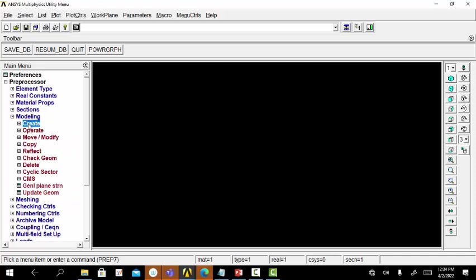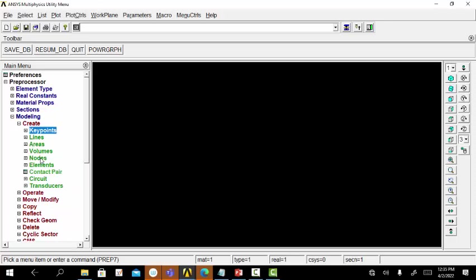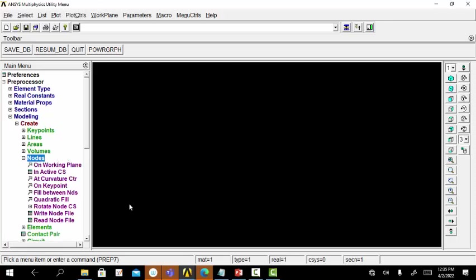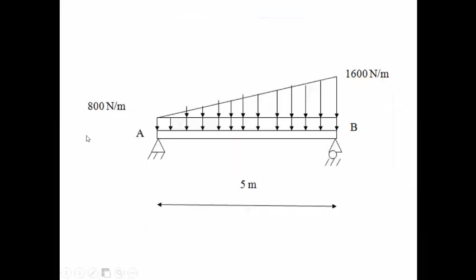Next we can model the entire beam element using the nodes and elements option. To apply the UVL values we have to go with nodes and elements option instead of key points and lines option. Here we can subdivide the entire element into 4 number of elements: first, second, third and fourth element. There will be 5 nodal points: 1, 2, 3, 4 and 5.